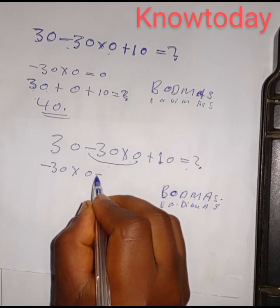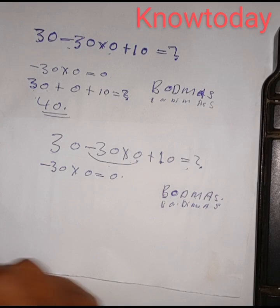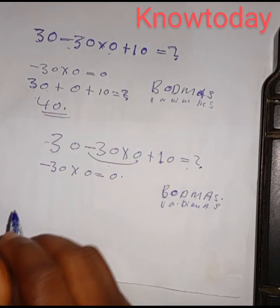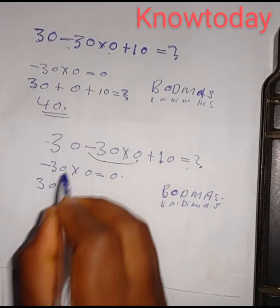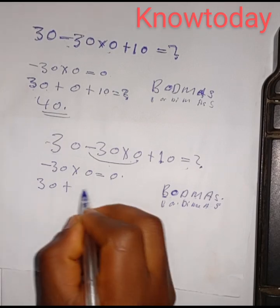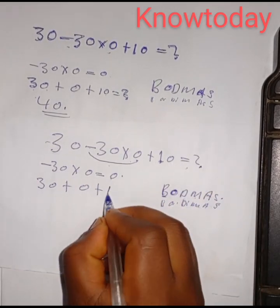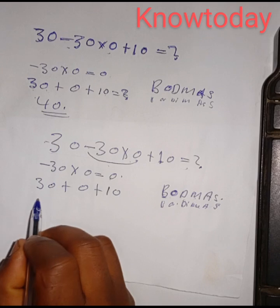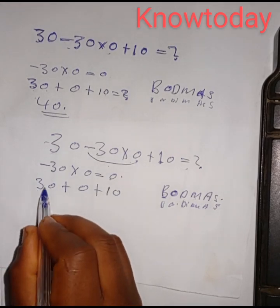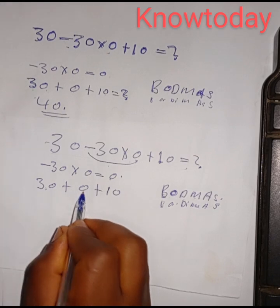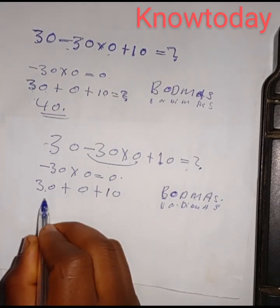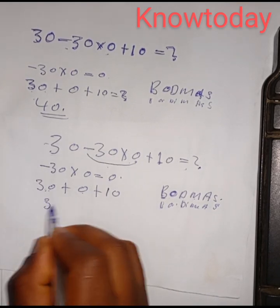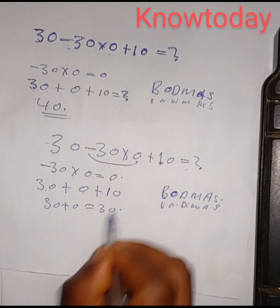The next thing according to this quiz is addition. So what are we adding? This 30 here is positive 30, so it is 30 plus this zero, then plus 10. So we are adding this expression. You just need to take 30 plus zero plus 10. 30 plus zero is 30, and 30 plus 10 is 40.